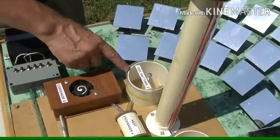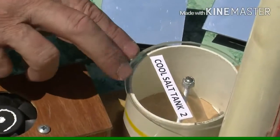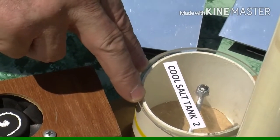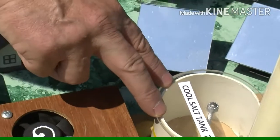So if I run through the way it operates, this tank here is the cool salt tank. And salt is the secret of the way this works. Because salt, at around about 200 degrees centigrade, melts. And it's just like ice and water. It melts, it becomes liquid.